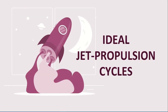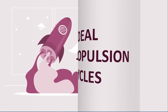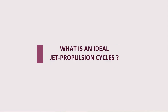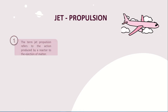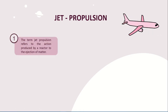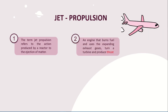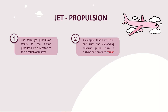The Ideal Jet Propulsion Cycles. Jet propulsion refers to the action produced by a reaction to the ejection of matter — an engine that burns fuel and uses the expanding exhaust gases, turns a turbine, and produces thrust.